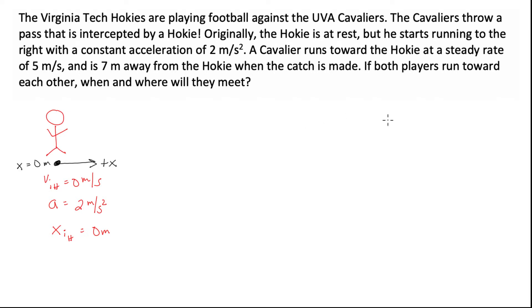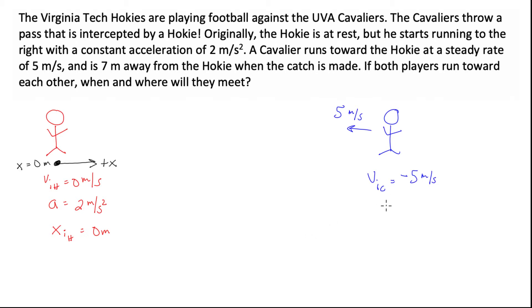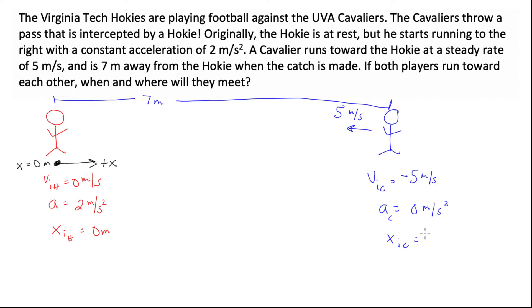Similarly, now I'm going to draw the Cavalier. The Cavalier is traveling toward the Hokie at 5 meters per second. Since this 5 meters per second is going to the left, but my positive axis points to the right, the Cavalier's initial velocity is actually minus 5 meters per second — because he's going in the opposite direction of the coordinate system. I also know that he's traveling at constant speed, so his acceleration is 0 meters per second squared. His initial position is 7 meters from the origin, since he starts 7 meters from the Hokie.